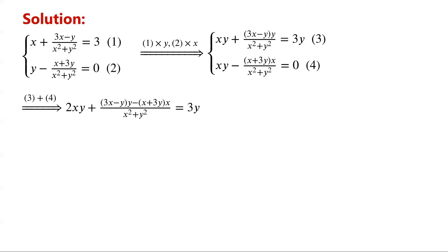(3x minus y)·y minus (x plus 3y)·x equals 3xy minus y squared minus x squared minus 3xy. The 3xy and negative 3xy in the numerator cancel, so the numerator becomes negative x squared minus y squared. The denominator is x squared plus y squared.